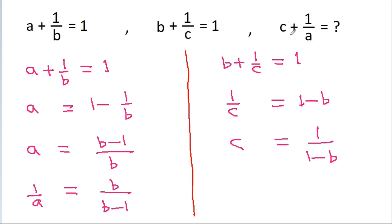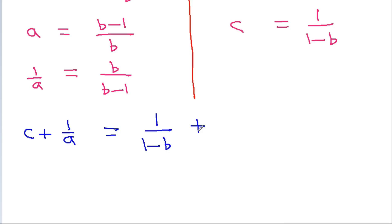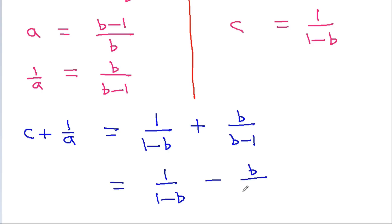We have to find the value of c plus 1 by a. c is 1 by 1 minus b, and 1 by a is b by b minus 1. Taking minus common, we get b by 1 minus b plus 1 by 1 minus b, which equals 1 minus b by 1 minus b, that is equal to 1.